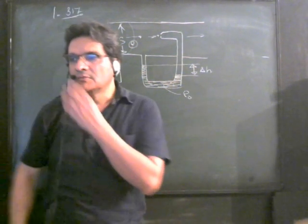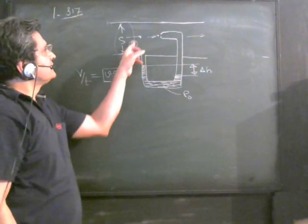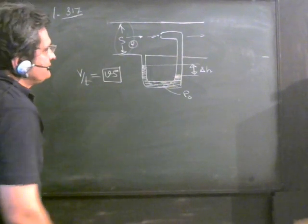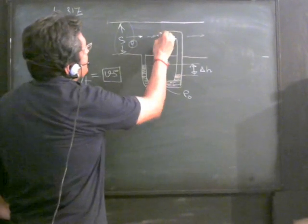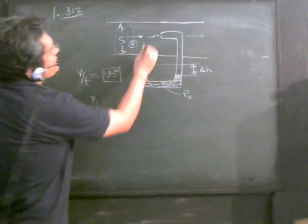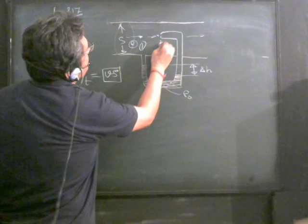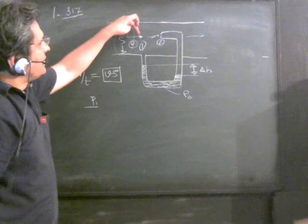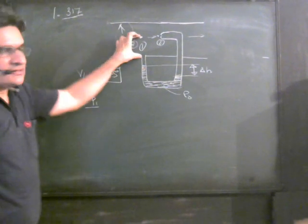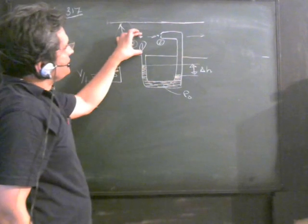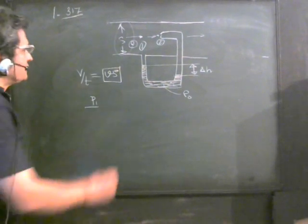It's a very simple problem. In such problems, apply Bernoulli's equation. If this point is 1 and this point is 2—that is, the mouth of the pitot tube is point 2 and point 1 is where you have the other opening of the pitot tube.